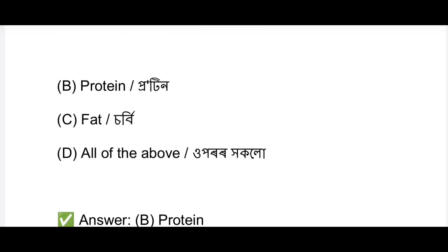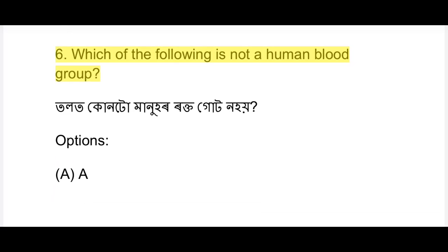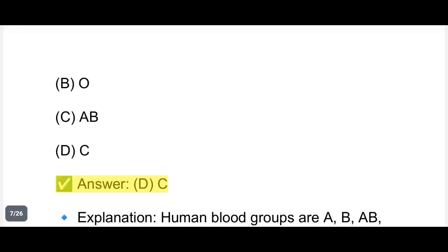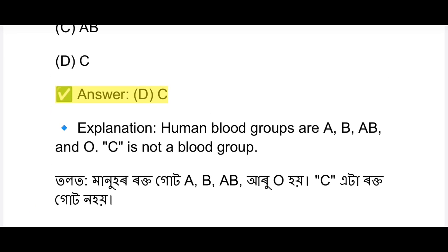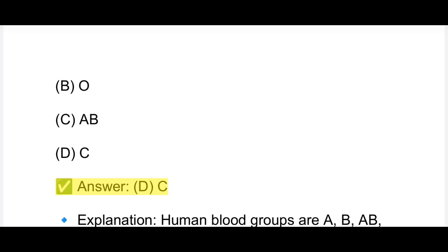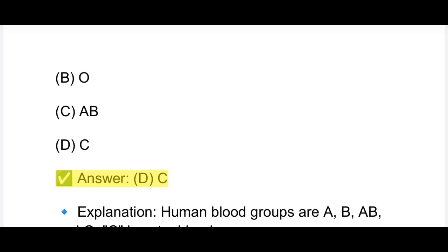Question on blood groups: options are A, B, C, AB. Wait - it is O. O blood group is the universal donor. Since O blood group can donate to anyone, it is the universal donor. I will share a detailed trick about blood groups in the description.